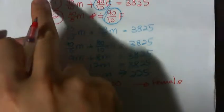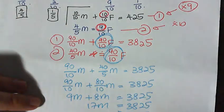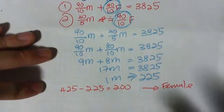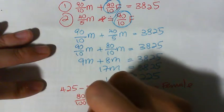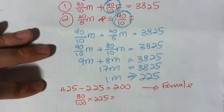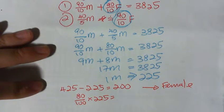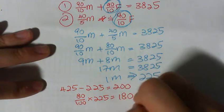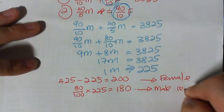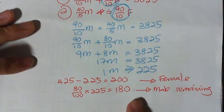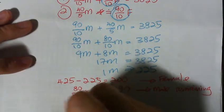They ask for how many workers are left in the company. 225, so I know that 20% of the male workers left. So 80 over 100 times 225 equals to 180. So this is the males remaining.